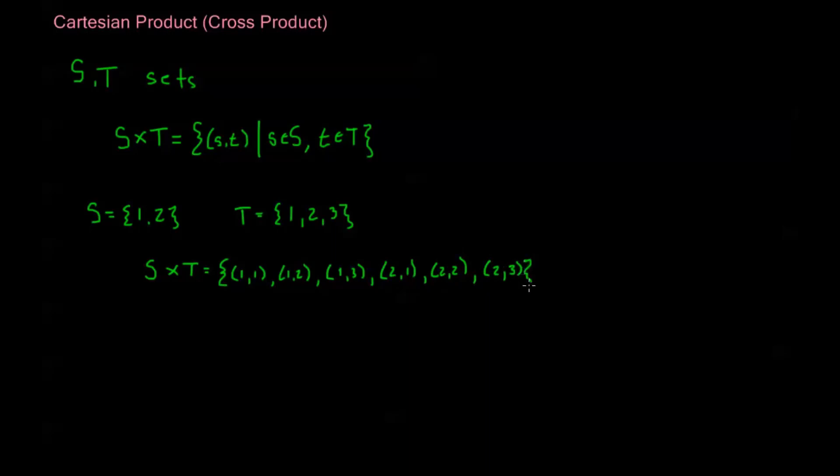It's all of the possible ordered pairs that I can make where the first element of the ordered pair is from my set S, and the second element of my ordered pair is from the set T.